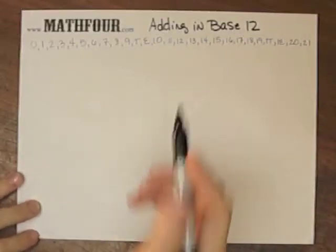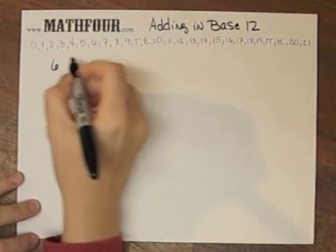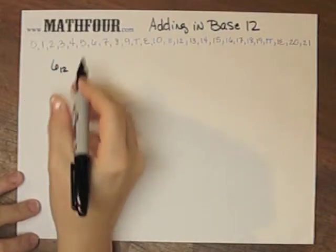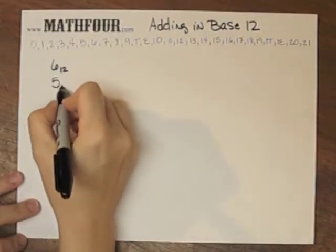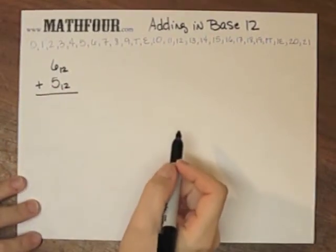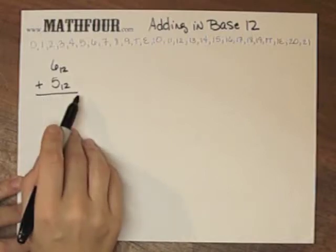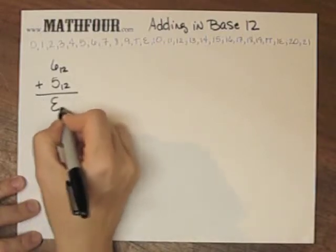This is adding in base 12. So first I'm going to do 6 base 12 plus 5 base 12. So that's easy enough. We know that that's 11. Well, what's 11 in base 12 but an E?